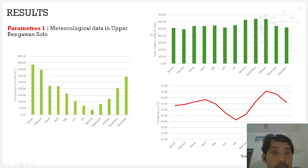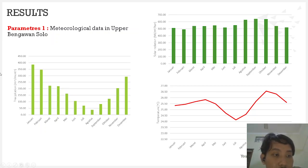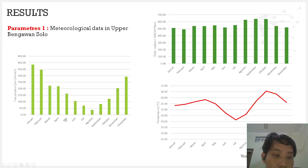The first result is the meteorological data in the upper Bengawan Solo watershed. From this data, we can see that the meteorological parameters are changing monthly. Precipitation is higher from November until April and declines when the month is from May until September.